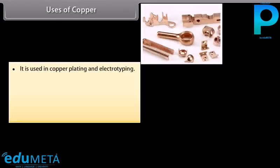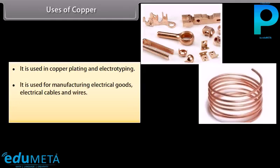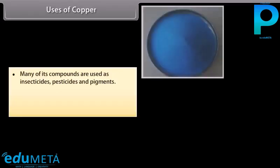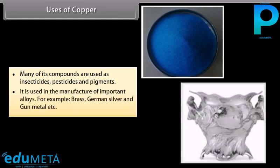Uses of Copper: It is used in copper plating and electrotyping. It is used for manufacturing electrical goods, cables and wires, vacuum pans, heating utensils and calorimeters. Many of its compounds are used as insecticides, pesticides and pigments. It is used in the manufacture of important alloys such as brass, German silver and gunmetal.